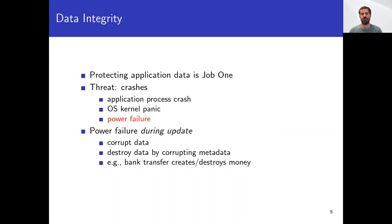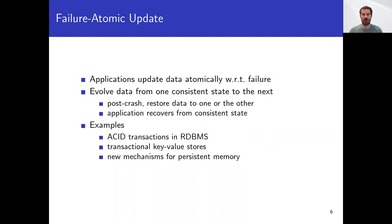An untimely crash could violate the conservation of money invariant by causing money to vanish into or appear from thin air. We cannot let that happen. Applications prevent crashes from harming data by updating data using mechanisms that are atomic with respect to failure. Such mechanisms promise to restore data to an application-defined consistent state following a crash, enabling applications to recover. Examples include ACID transactions in relational database management systems, transactional key-value stores, and new mechanisms for persistent memory. They all protect application data from power failures — or at least that's what the advertisements say.